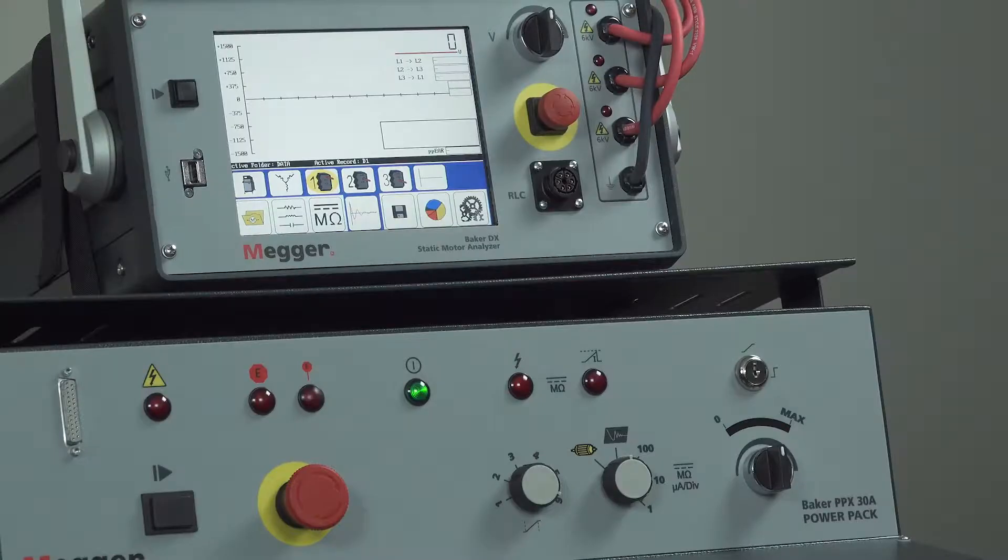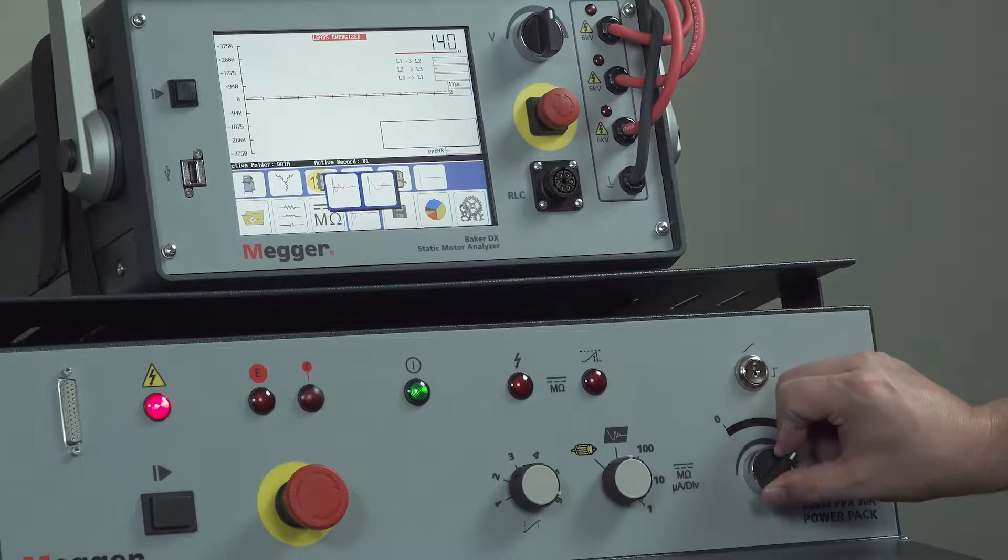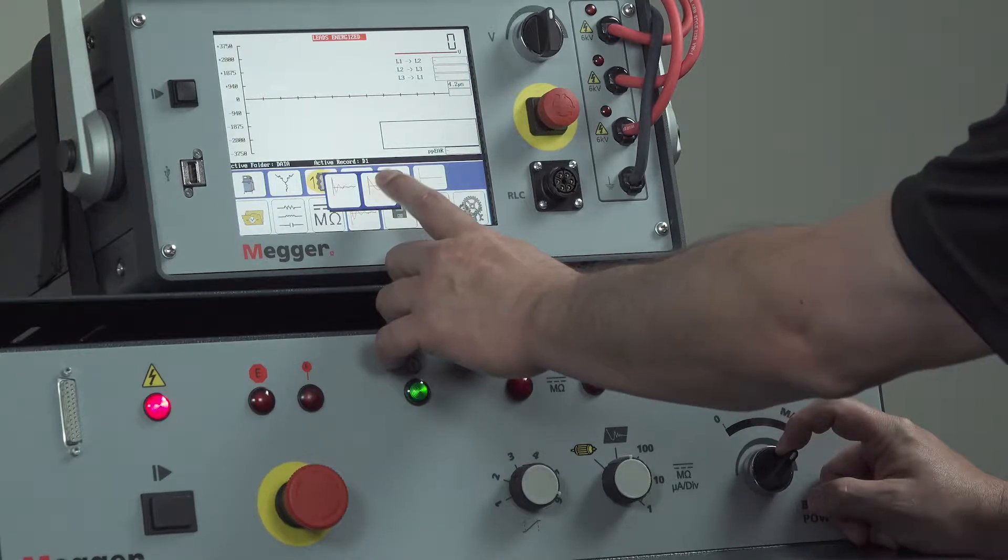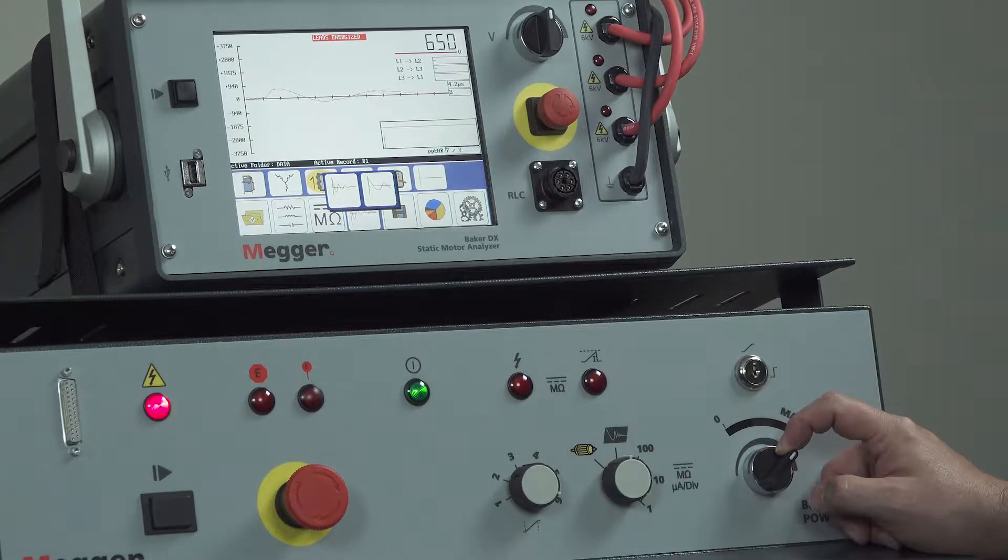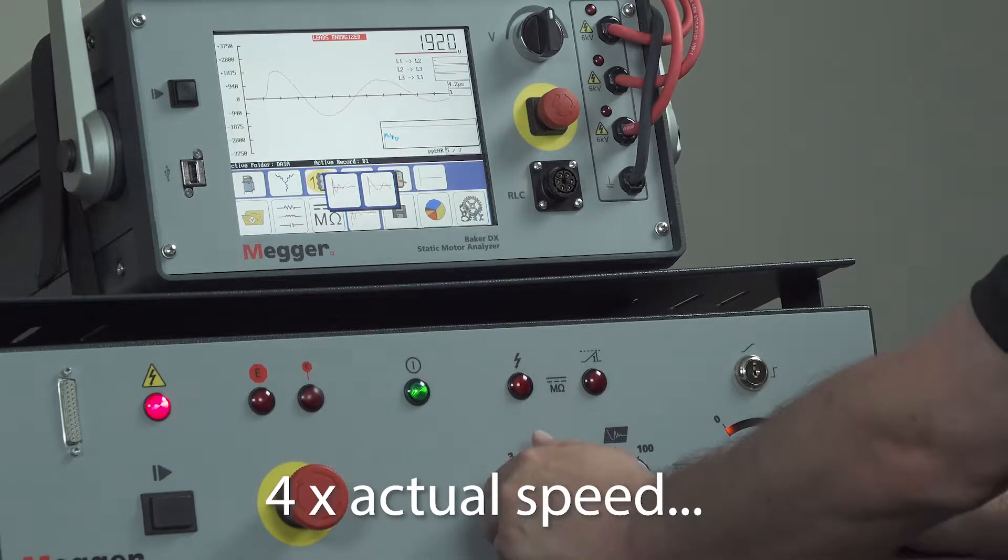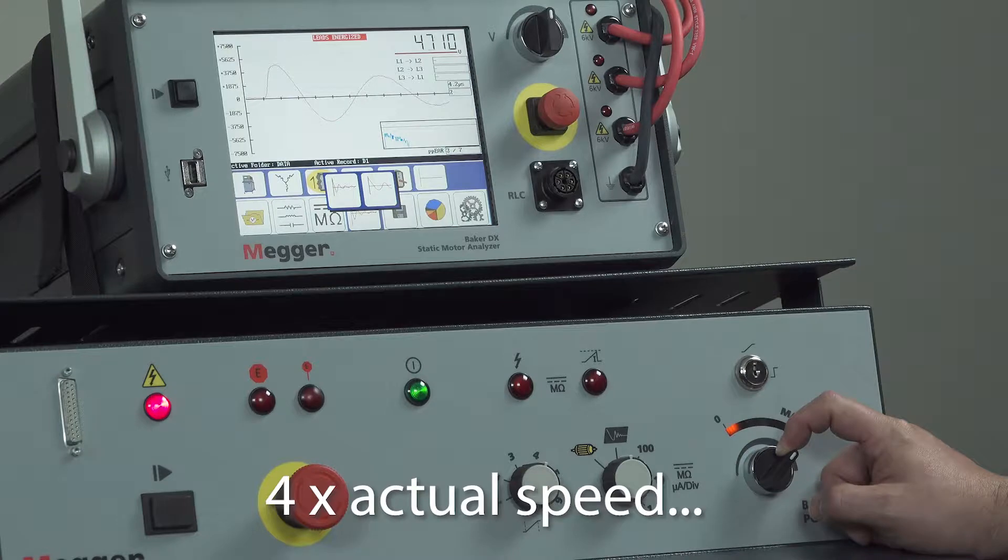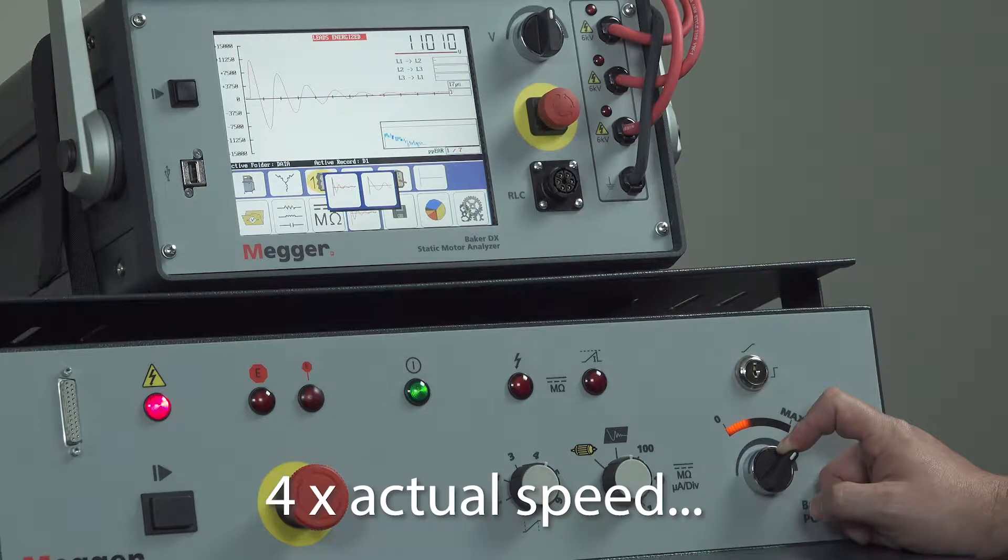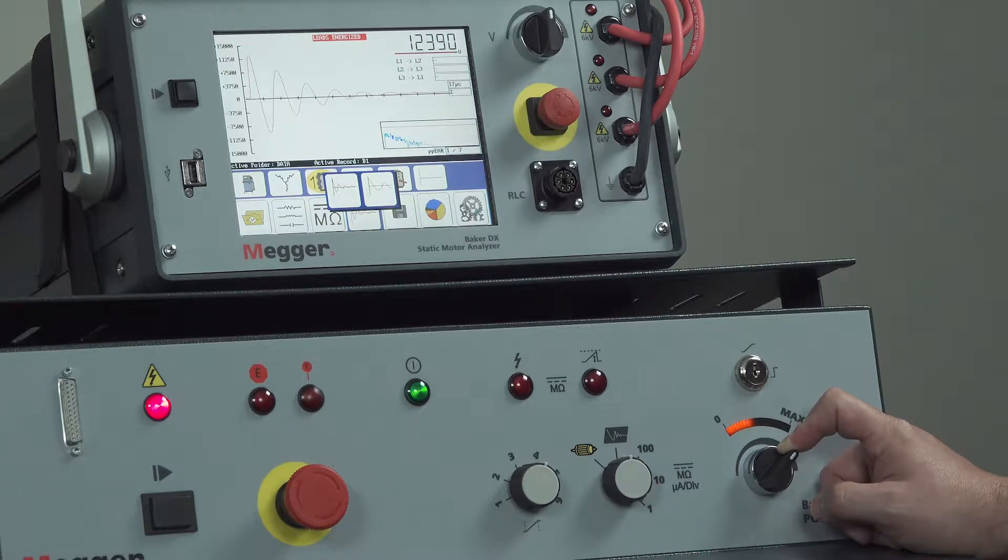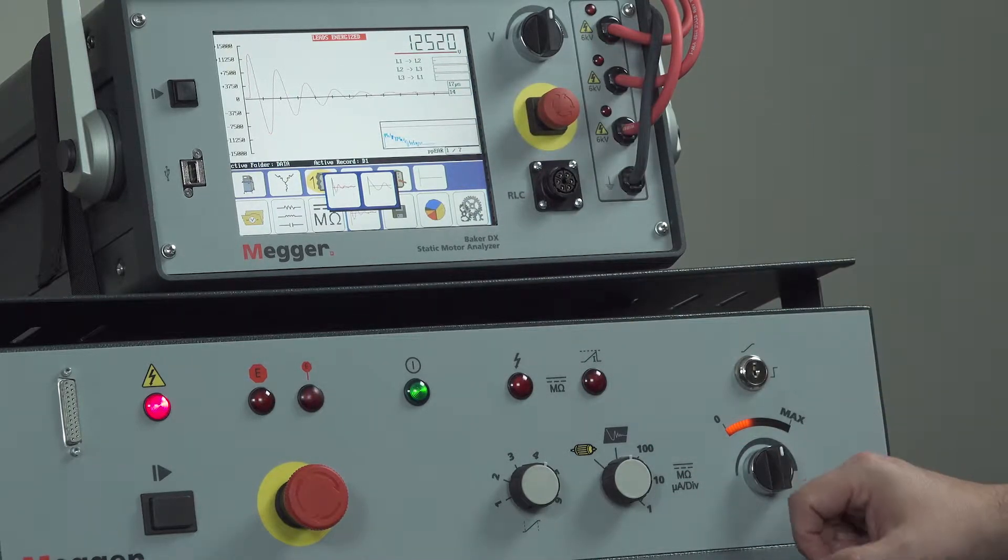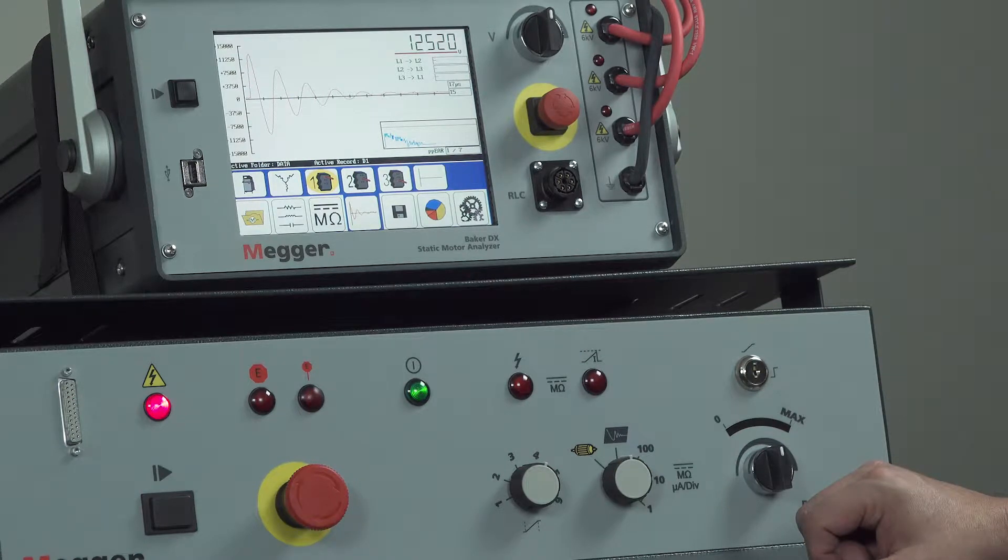Now we want to increase the voltage by taking the voltage control knob clockwise. We'll look up at the screen and look for the waveform, and we want to continue to ramp until the test voltage is achieved. In this case is 12,500. Then allow just a few pulses to at least see 10 pulses, and then you're done with that particular phase.